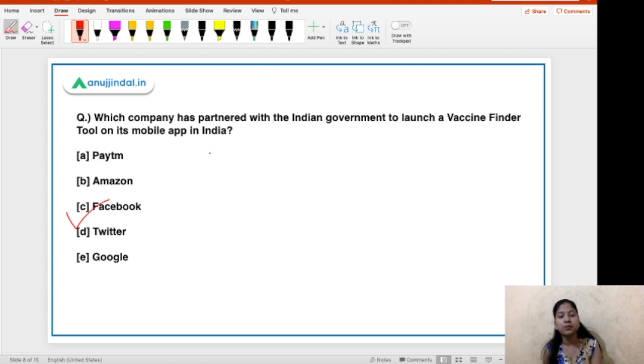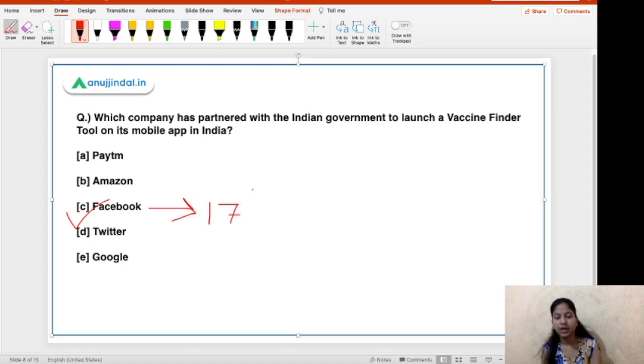Vaccine location will be located through this tool, which will be available on Facebook application. Now, apart from this, the most important point here that you should remember about this tool is that it has been launched in 17 languages. So, this was another part that is important regarding this Vaccine Finder tool. Apart from this, Facebook has also announced an assistance of US$10 million for India, so that India can fight this coronavirus pandemic better. So, that was all about this news.